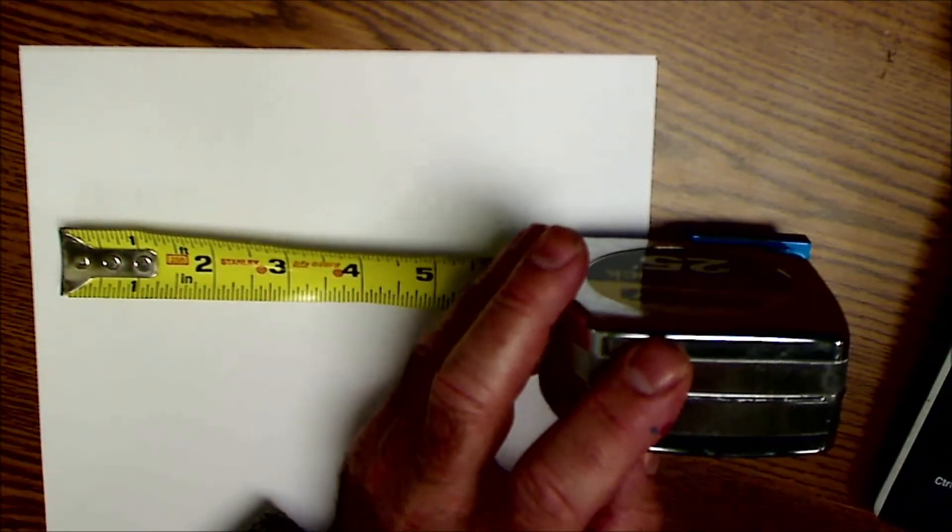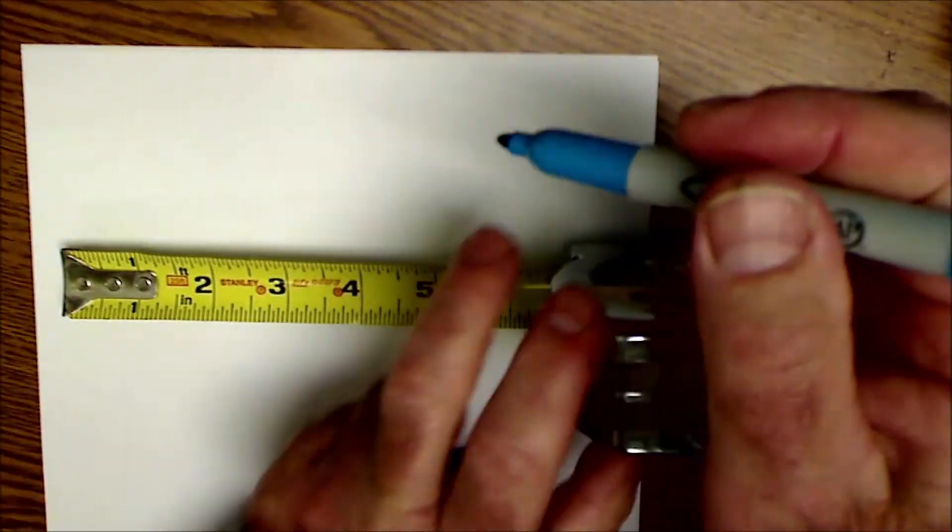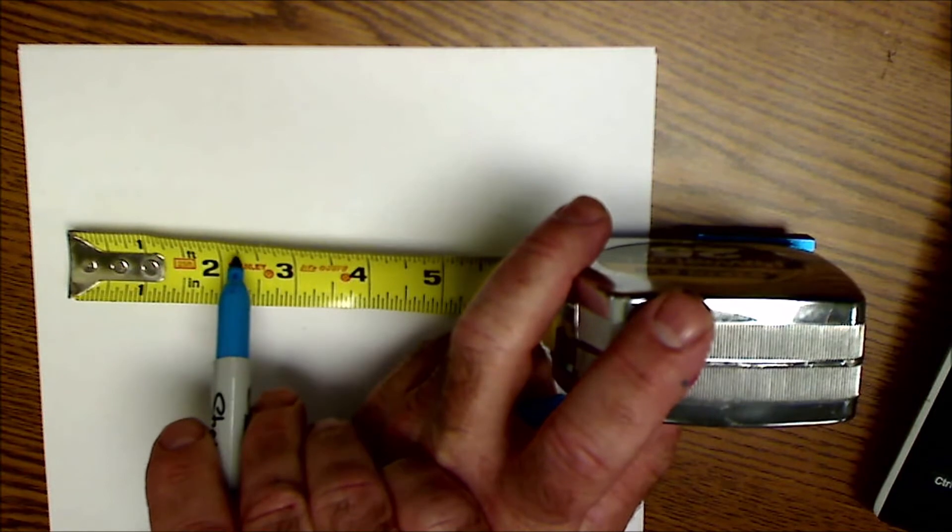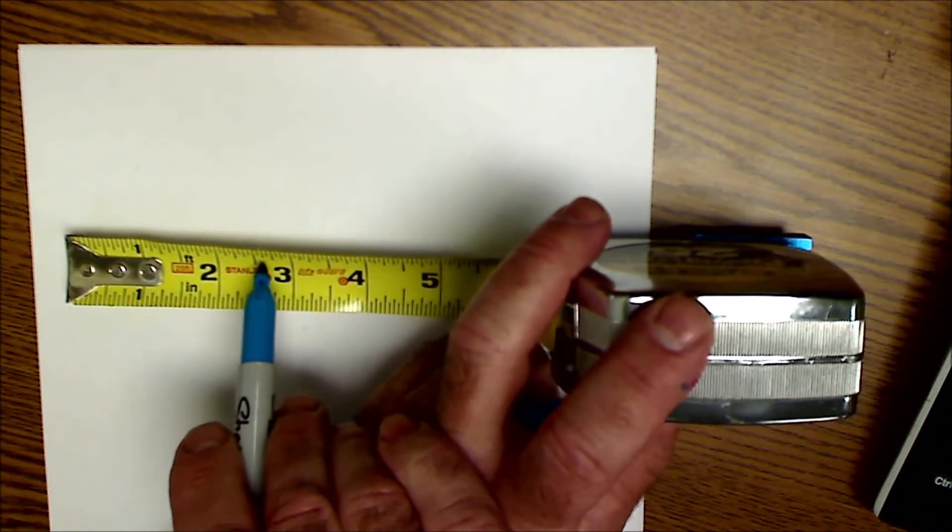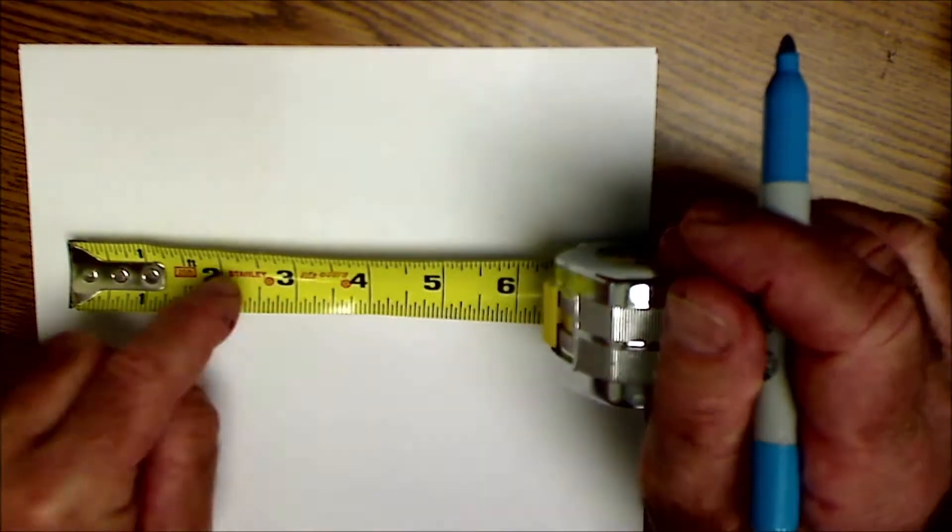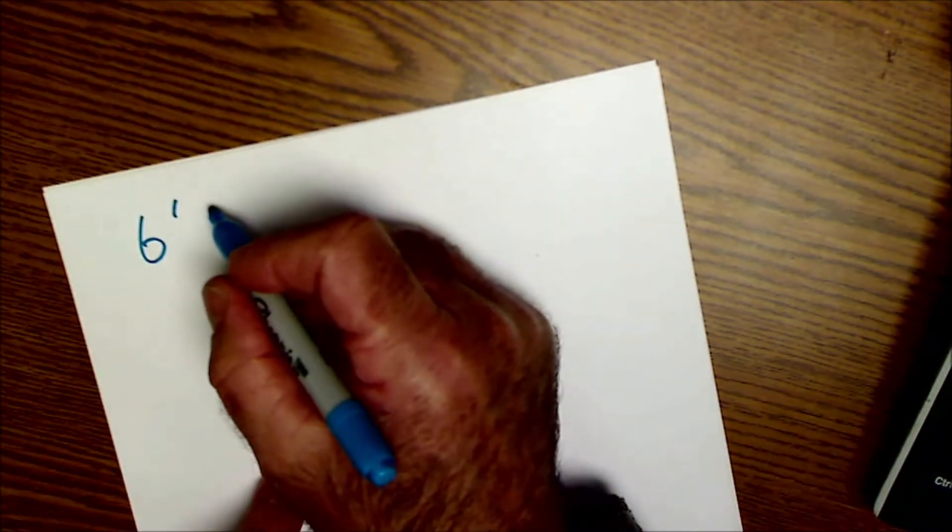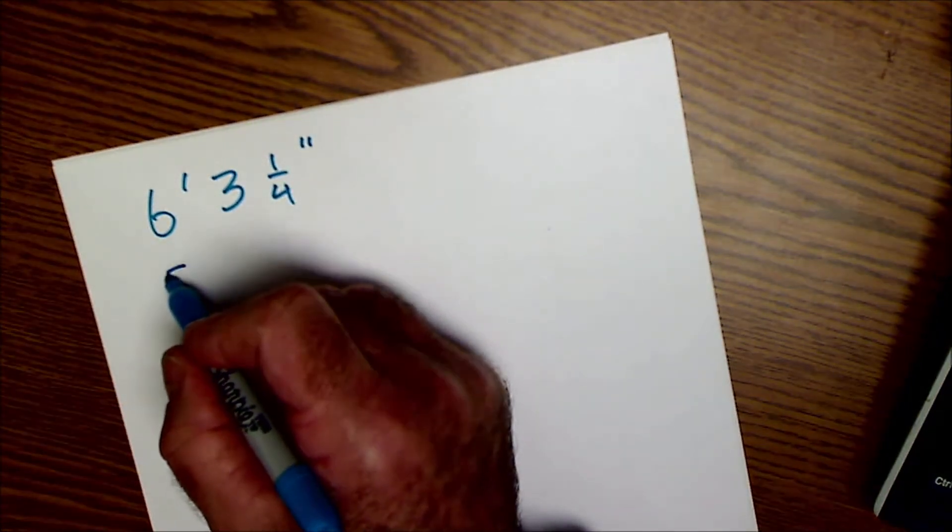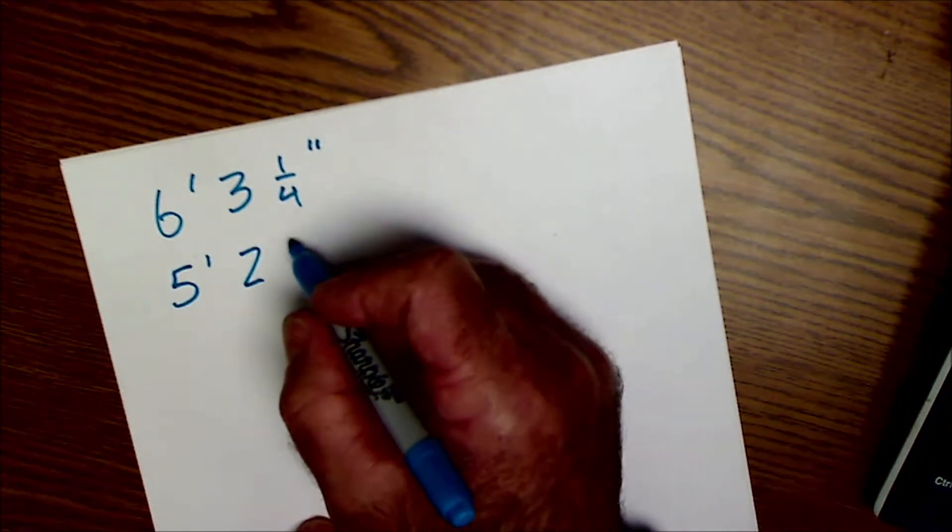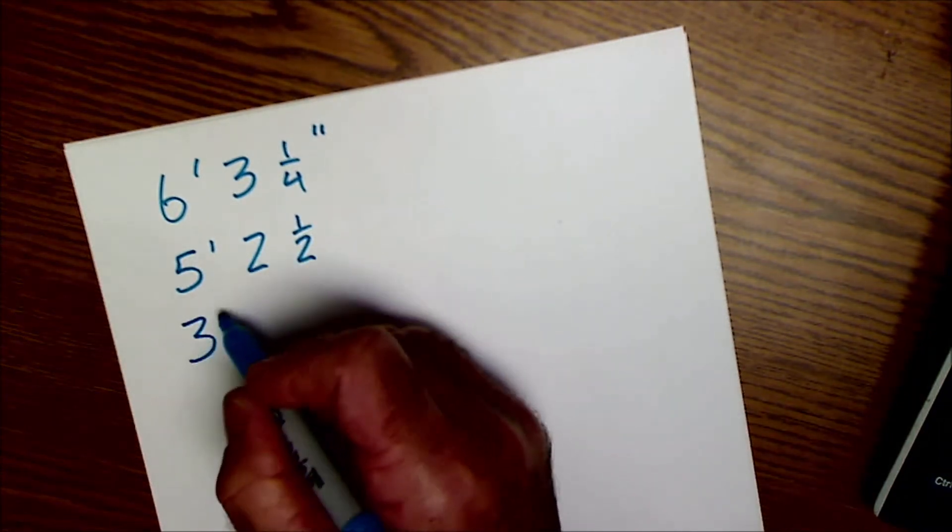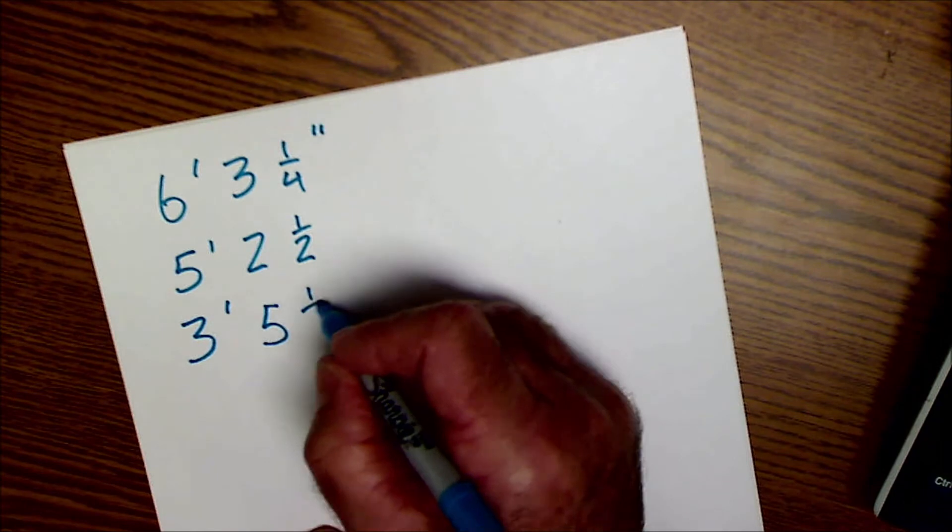After feet and inches we go to 16th of an inch and I know this ruler is in 16ths because if I count up all these marks: 1, 2, 3, 4, that's a quarter; 5, 6, 7, 8, that's a half; 9, 10, 11, 12, three quarters; 13, 14, 15, 16 gives me a full inch.